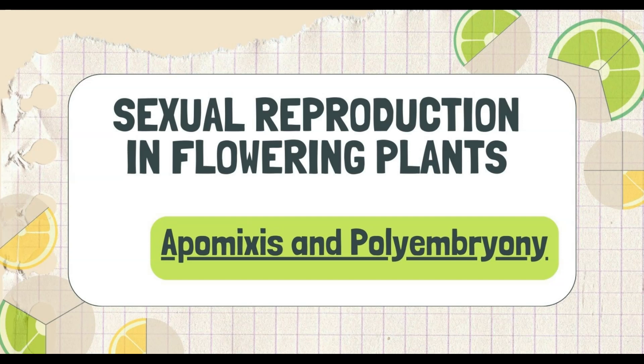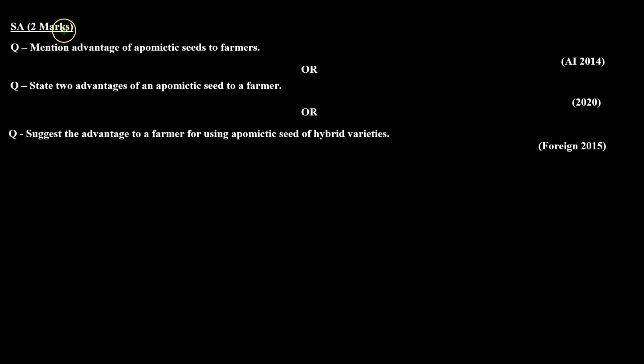Hello everyone. We are solving previous year questions of the chapter sexual reproduction in flowering plants, on the topics apomyxis and polyembryony. In today's session we are going to solve a short answer type question of two marks which was asked in different ways in different years.